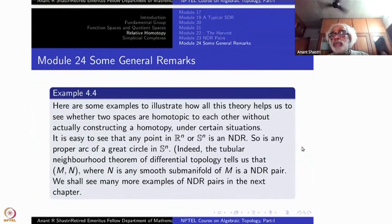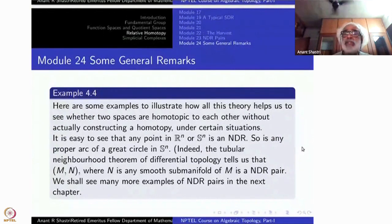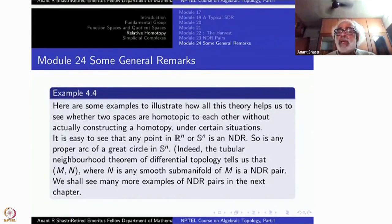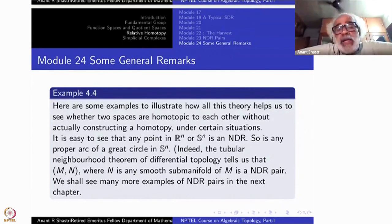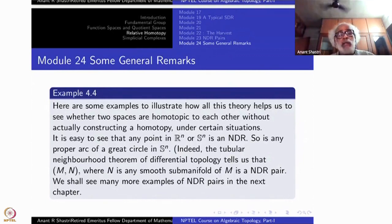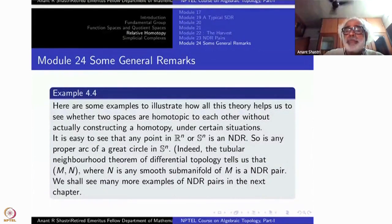We have a big list of things: function U, function H, and so on. It essentially says that there is a neighborhood of the given subset that deformation retracts to the subset inside a slightly larger neighborhood. In fact, this is the case with many other examples of subsets of Rn. For example, any smooth arc will be an NDR subspace.